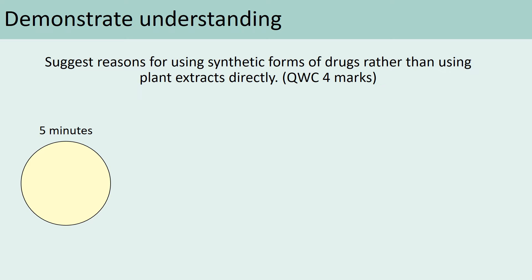Before we move on to the third and final drug — penicillin, a type of antibiotic — we're going to think about why we synthesize, meaning man-make, drugs instead of using plant extracts directly. The command word is 'suggest', which means they don't expect you to know the answer, but you use your knowledge to think about reasons. The question is: suggest reasons for using synthetic forms of drugs rather than using plant extracts directly. It's worth four marks, so pause the video and have a go.